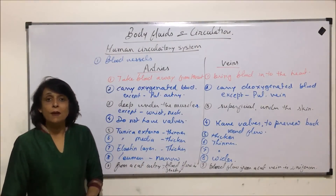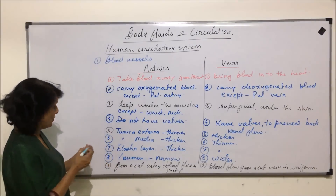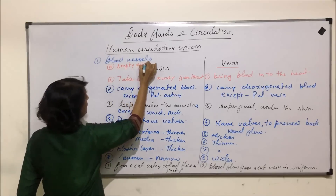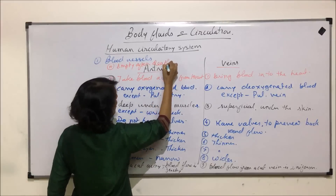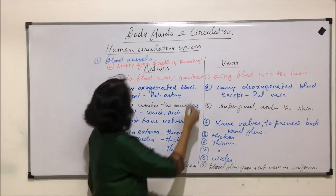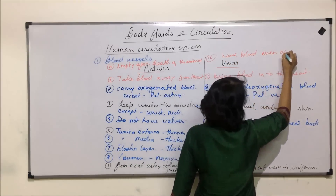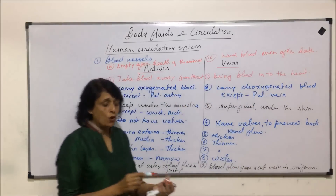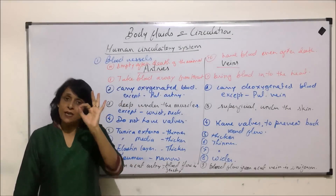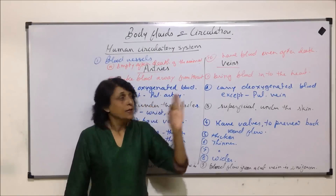One more interesting thing about these blood vessels: arteries get empty after a person's death, whereas veins still have blood — they have blood even after death. One more comparison: if an empty artery is cut after death, the section is going to be circular, whereas if the vein is cut after death, the circular vein diameter is going to collapse. So that is also one difference between arteries and veins.